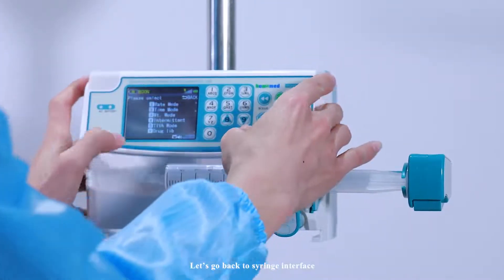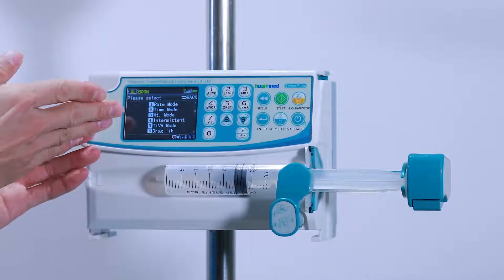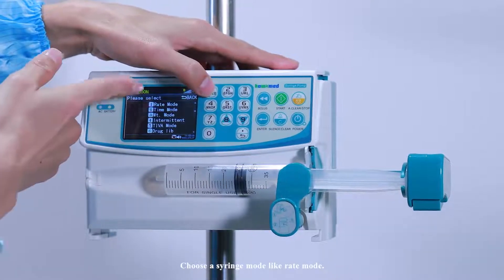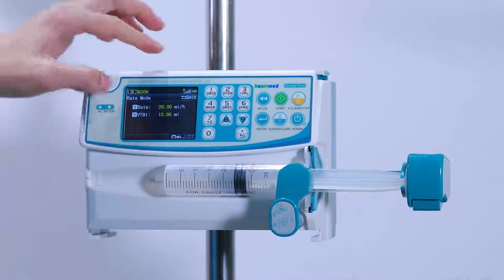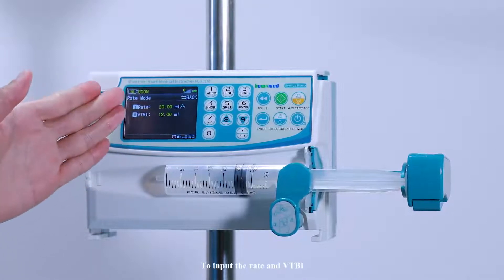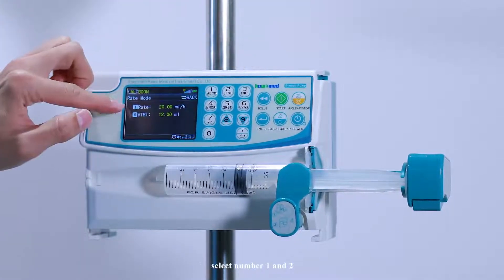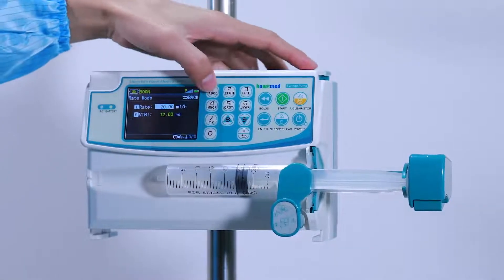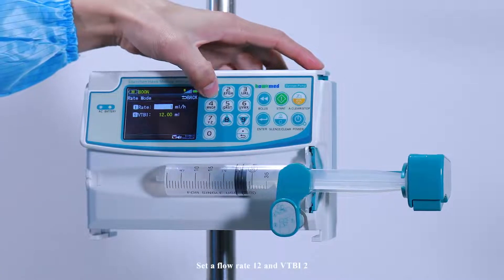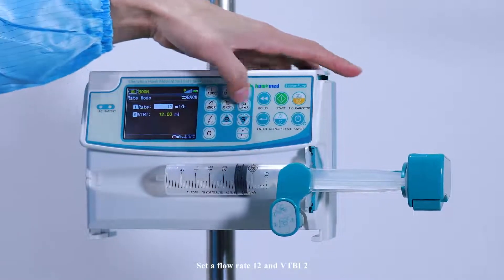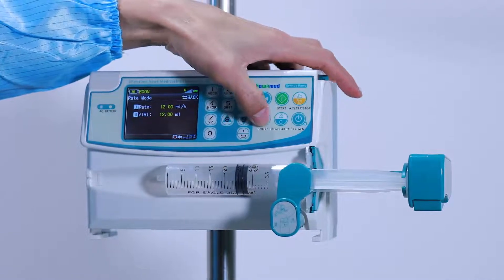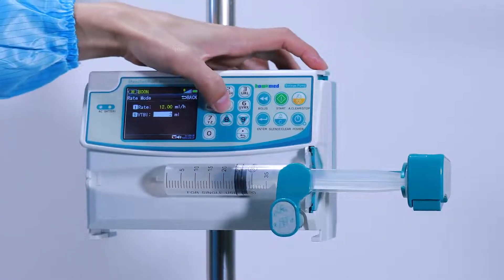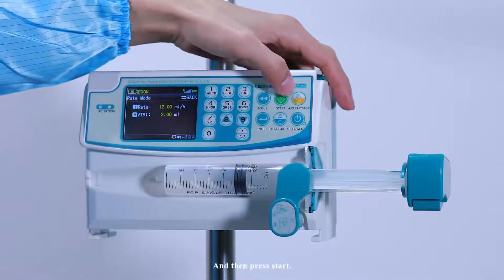Let's go back to syringe interface. Choose syringe mode like rate mode. To input rate and VTBI, select number 1 and 2. Set flow rate 12 and VTBI 2, and then press start.